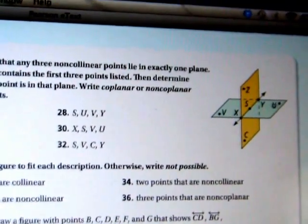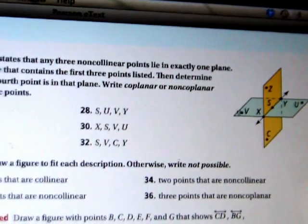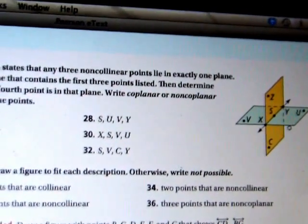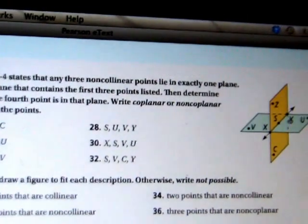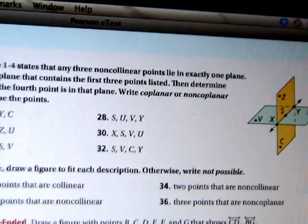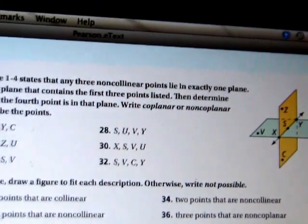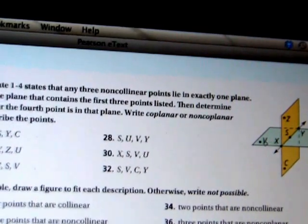Next, S, U, V, and Y. Here's S, here's U, here's V. So they lie in this plane right here. And Y, the fourth point, also lies in the plane. So S, U, V, and Y are also coplanar.